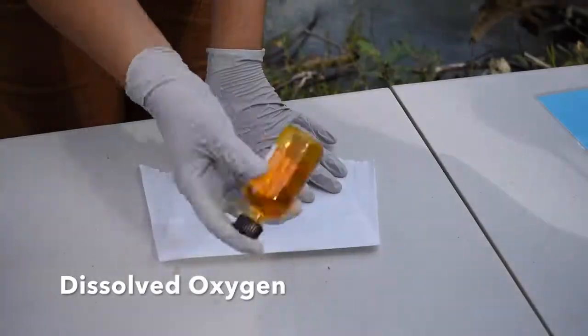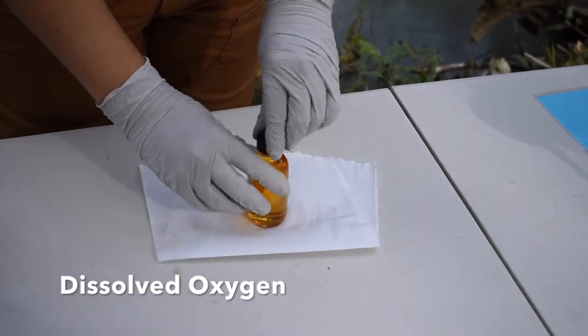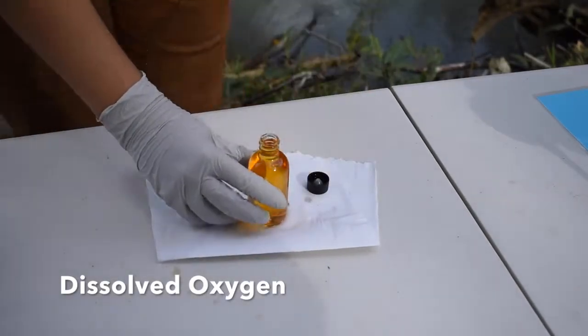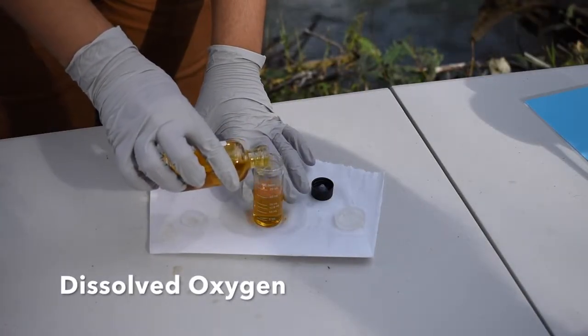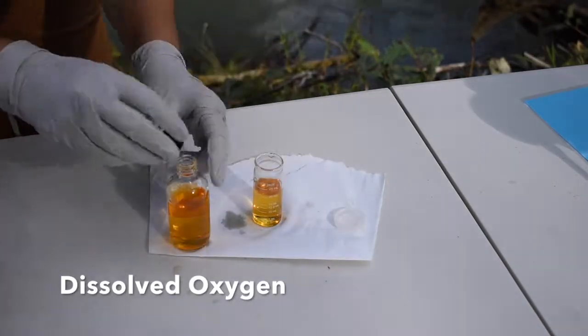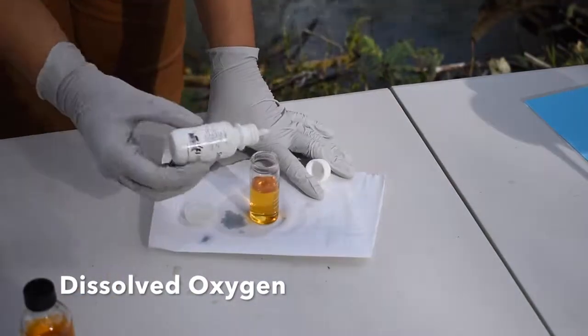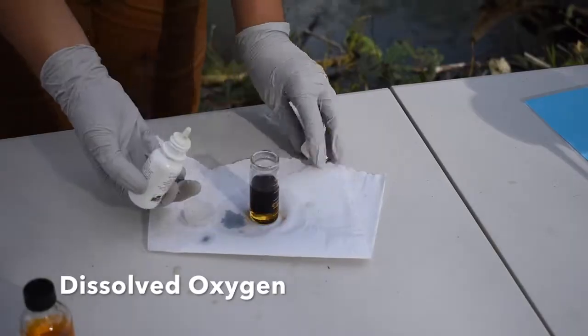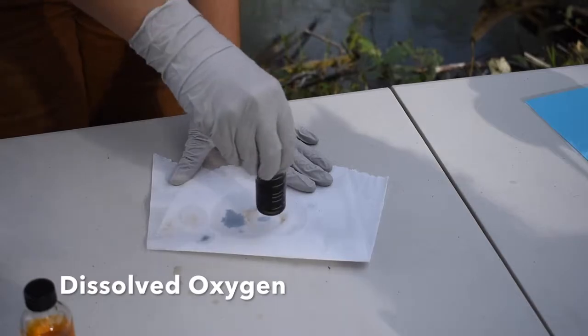Next, we are going to invert to mix until all of the precipitate has dissolved. Then we will open our sample bottle and fill our B bottle with 20 milliliters of sample. Next, we will add 8 drops of chemical number 4, starch indicator solution, cap the bottle, and swirl to mix.